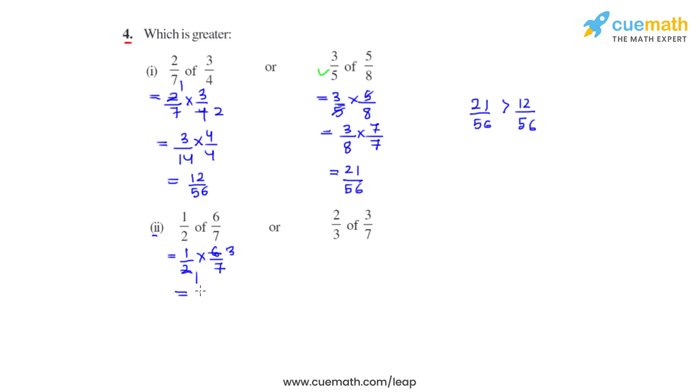Now 2 over 3 times 3 over 7. We can cancel out 3 and 3. We get 2 over 7.